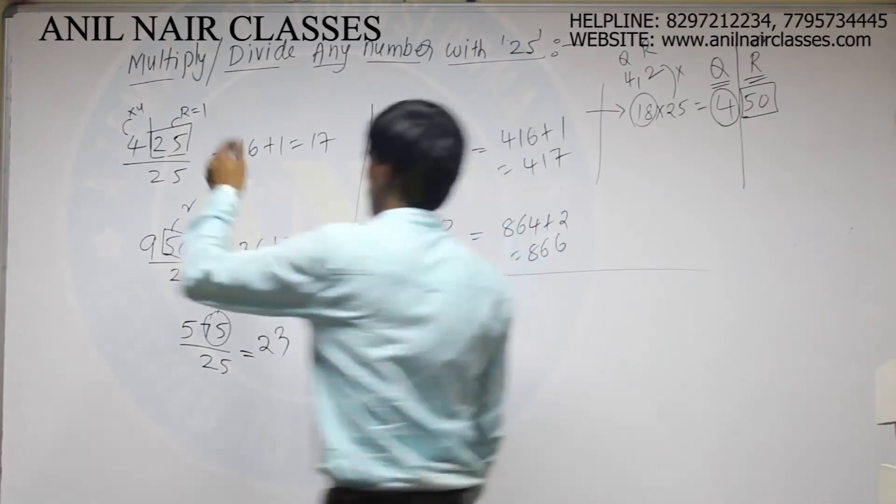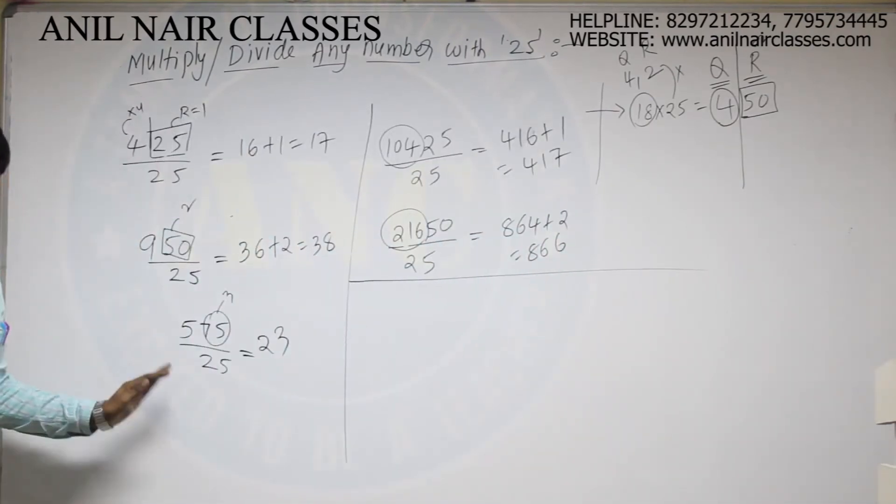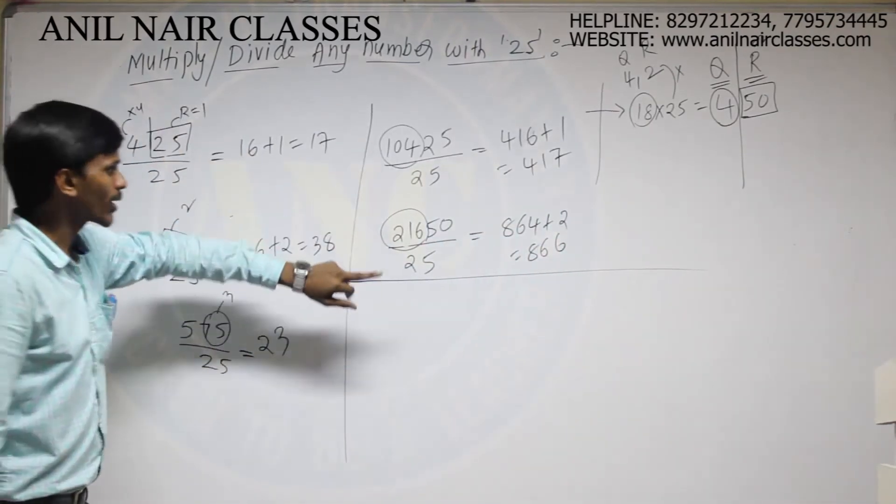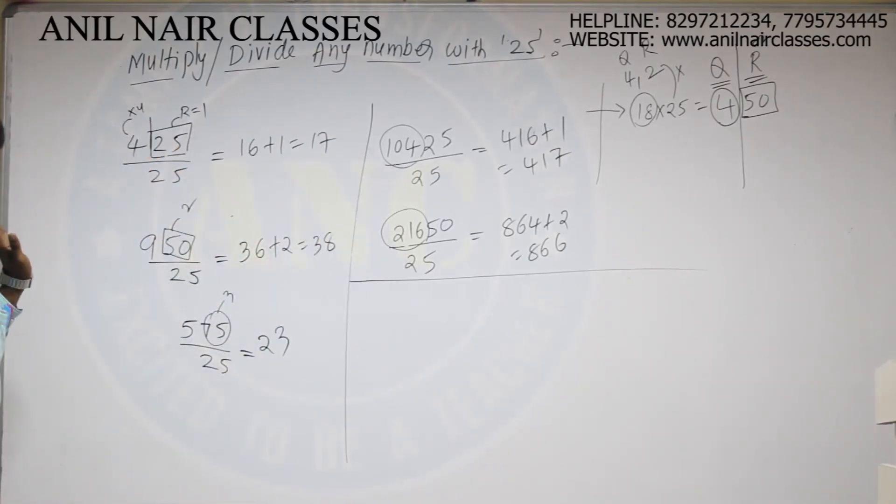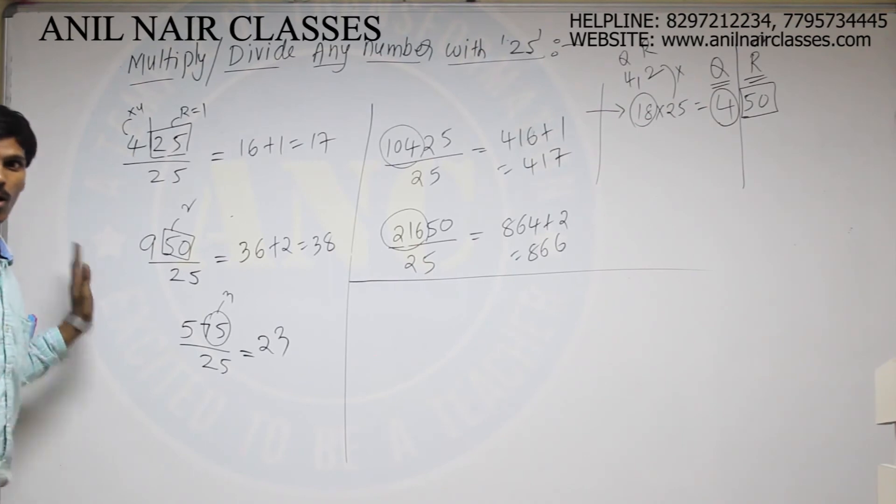So like this not only 3 digit number, 4 digit number, for any given number you can directly divide this number with 25 by using this trick. I hope you got it. All the best.